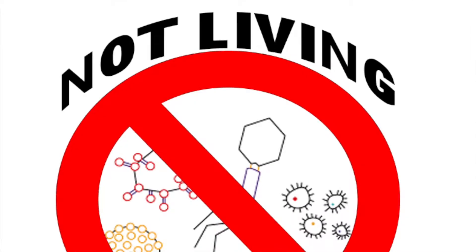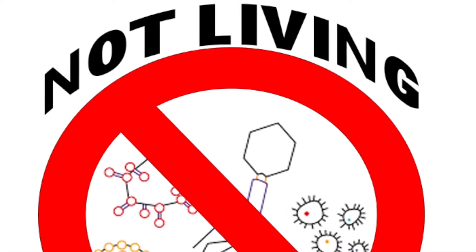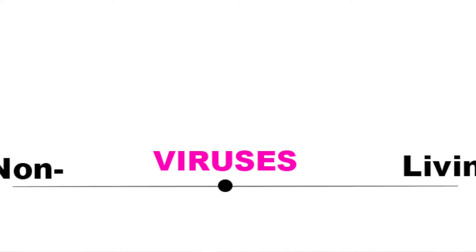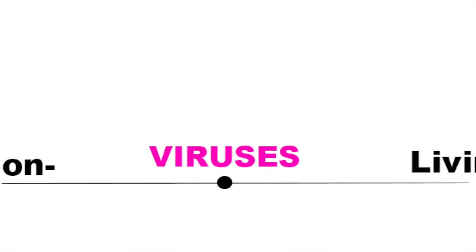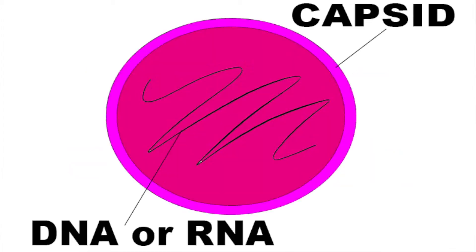First of all, viruses aren't even living. It's complicated, but viruses are like between living and non-living. They have no cells — they're just genetic material, which is DNA or RNA, wrapped up inside a capsid. A capsid is a protective shell made up of proteins.